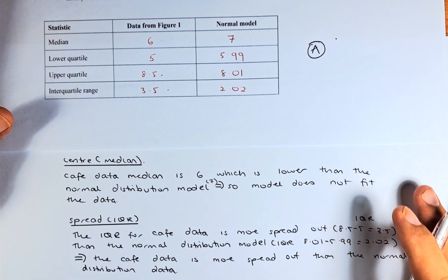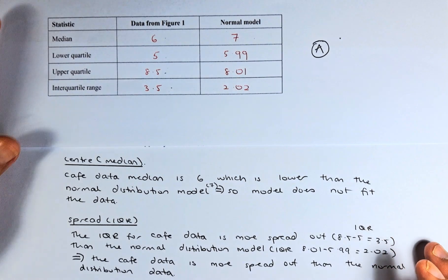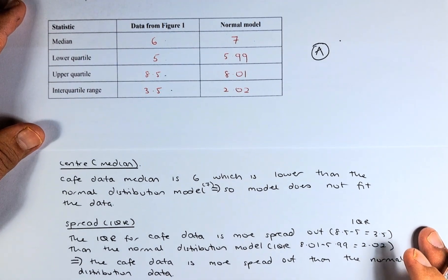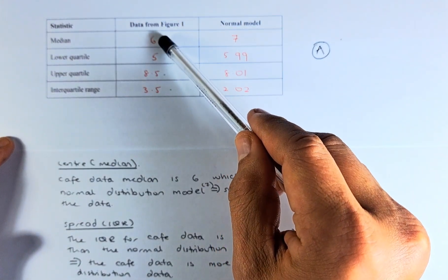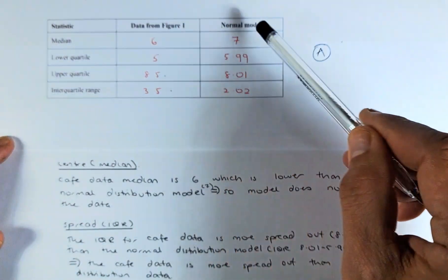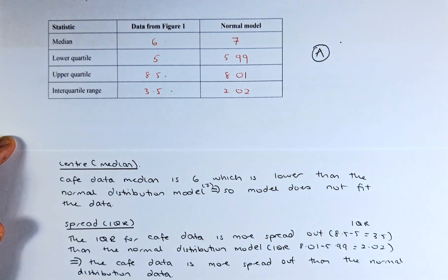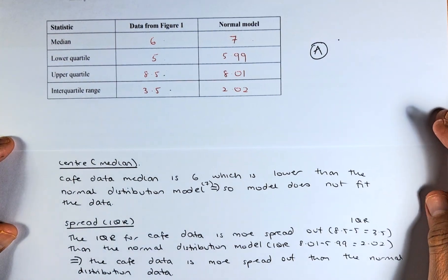We are going to compare the centre, the spread, and the shape. The centre, you can see we talked about the median. The cafe data is 6 while the normal distribution is 7, so it does not fit the data well enough.